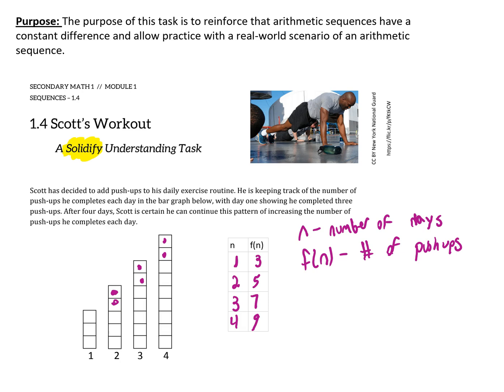This is an arithmetic sequence because it is growing by a constant difference, meaning every time as I go from one number to the next in the sequence I'm adding a constant amount, which in this case is two.